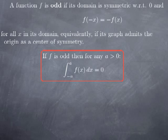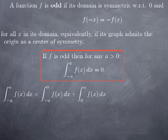This geometric argument tells us that if we have an odd function and we integrate it over an interval centered at the origin, then this integral is going to be zero. If you're not fully satisfied by the geometric argument, we can check that algebraically as well. Starting with the integral from negative a to a of an odd function, we can split it as the integral from negative a to zero plus the integral from zero to a.